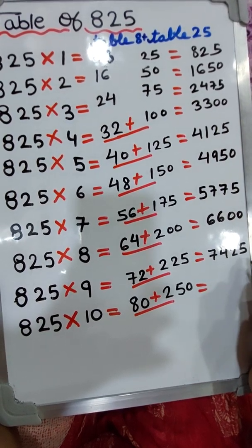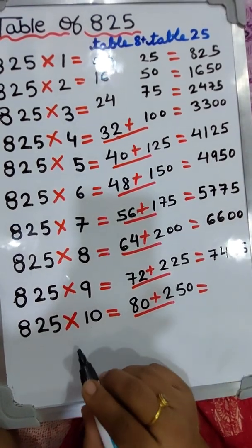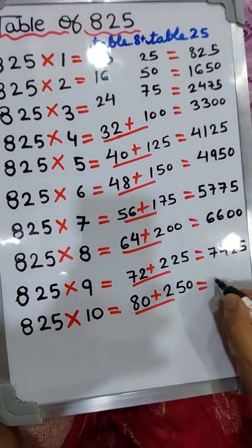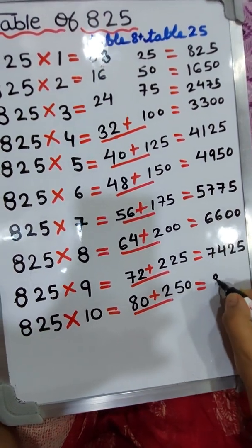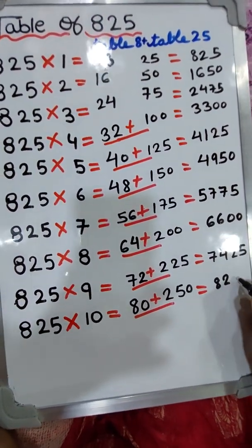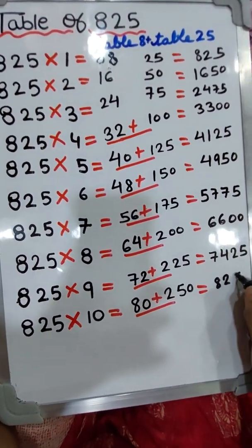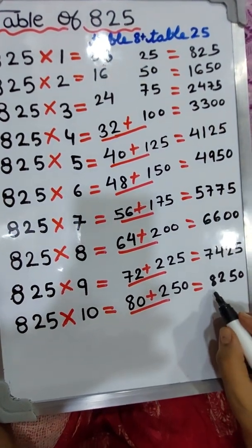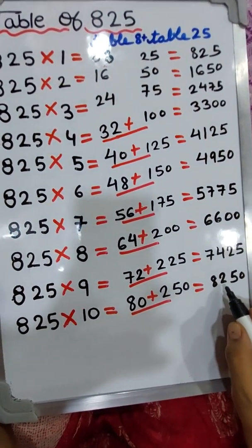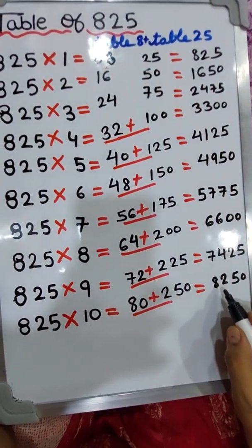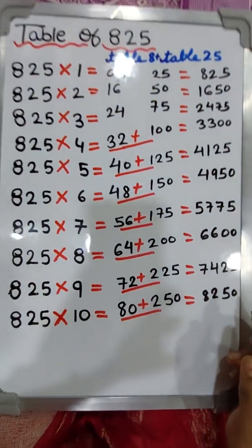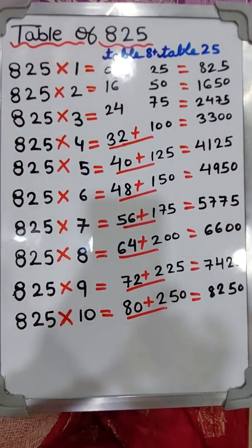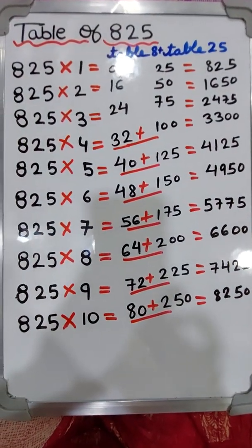825 tens are eight thousand two hundred and fifty. This is the table of eight hundred and twenty-five.